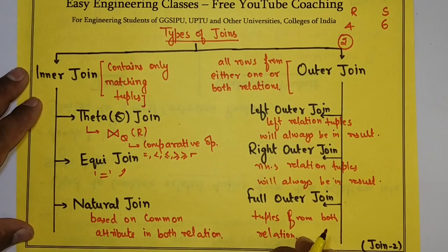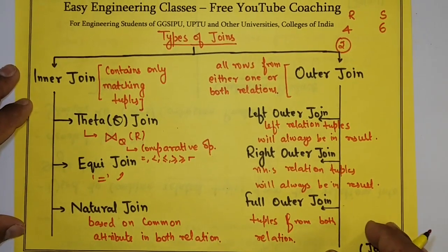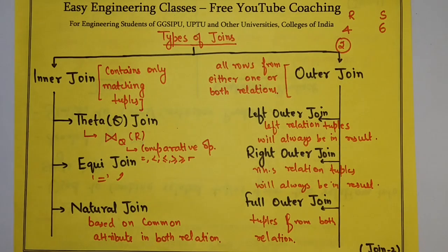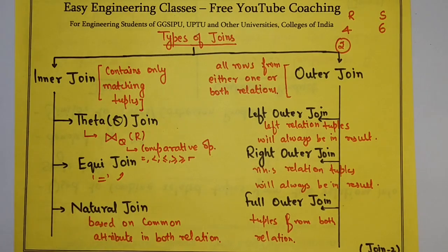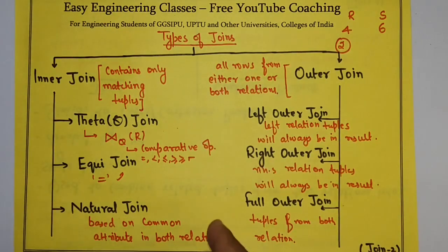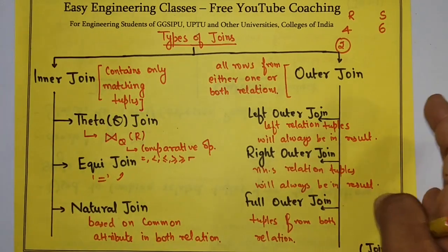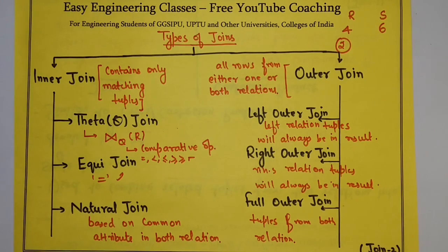So this is the complete classification of joins in relational algebra. It is very important for your theory exam — if someone asks how you can classify joins in relational algebra, you can draw the complete diagram and explain with examples. In the coming lectures I will show examples of each join in detail. Thank you for watching. Please subscribe to the YouTube channel for more tutorials on database and other computer science subjects.